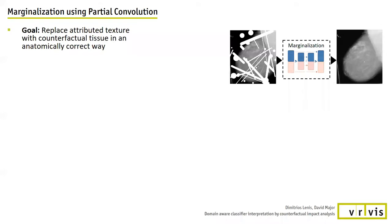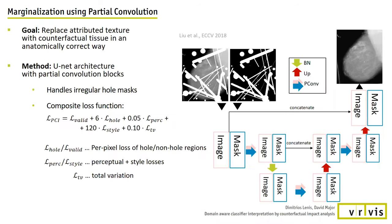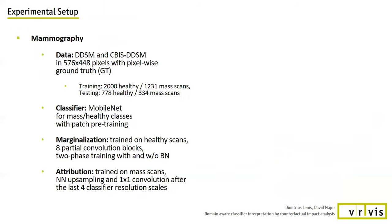The marginalization network has the task to replace attributed image regions with healthy tissue in an anatomically correct way. To solve this, we chose the U-Net-like architecture with partial convolution. This network takes as input the masked image and the binarized map and yields an inpainted image. It utilizes partial convolution, which considers only unmasked inputs in a sliding window to compute its output, and can handle irregular hole masks likely during attribution training. It uses a composite loss function that balances different components: per-pixel losses for local context, and perceptual and style losses for global joint region interaction, favoring globally sound anatomy. An additional total variation component ensures smooth transition between missing and present image regions.